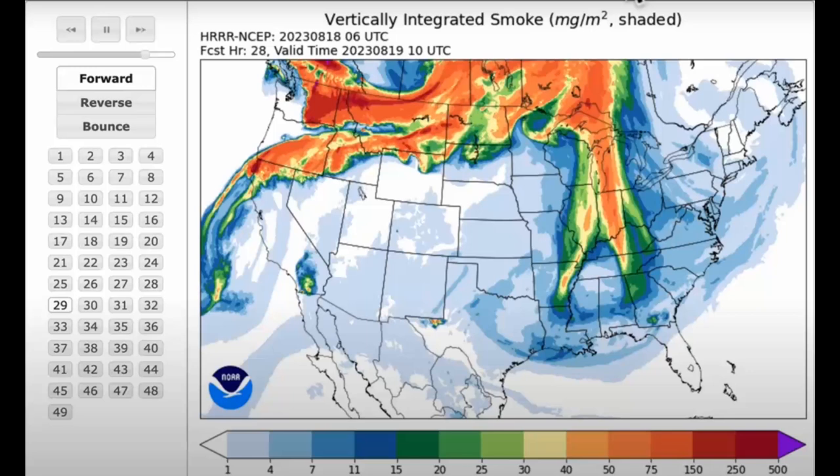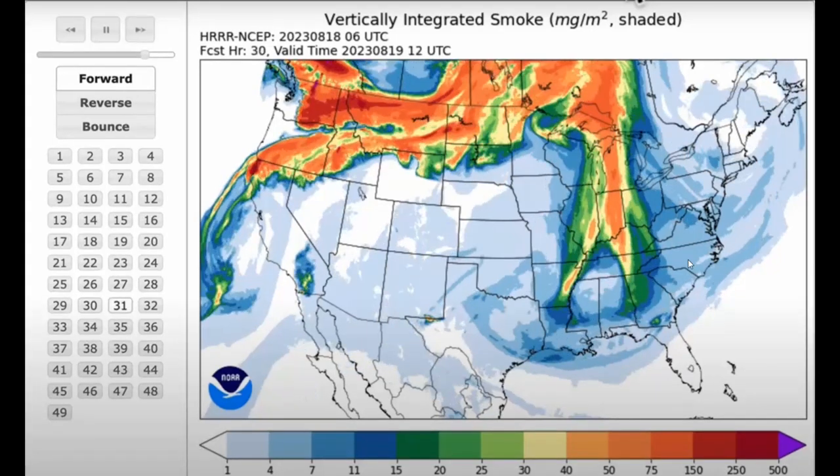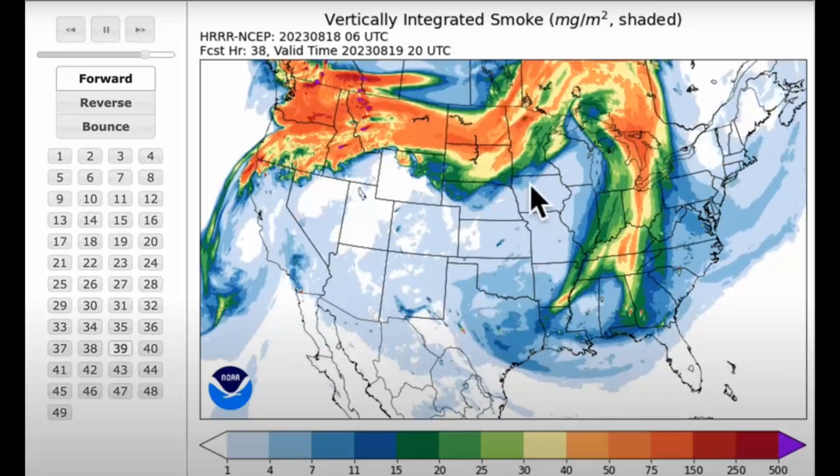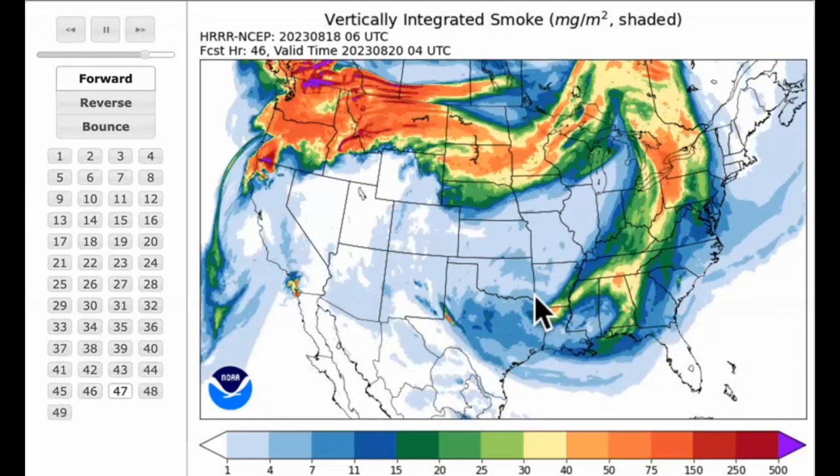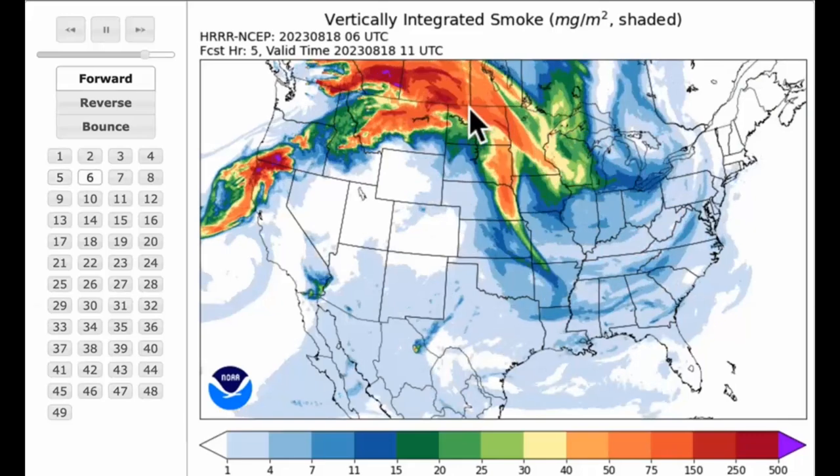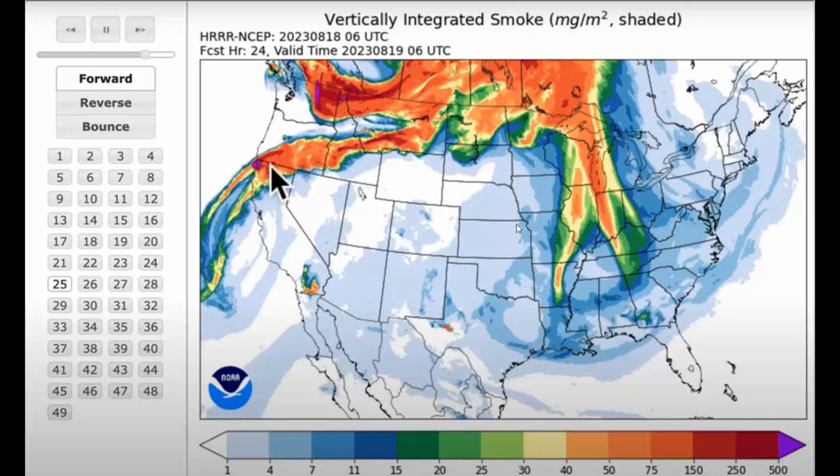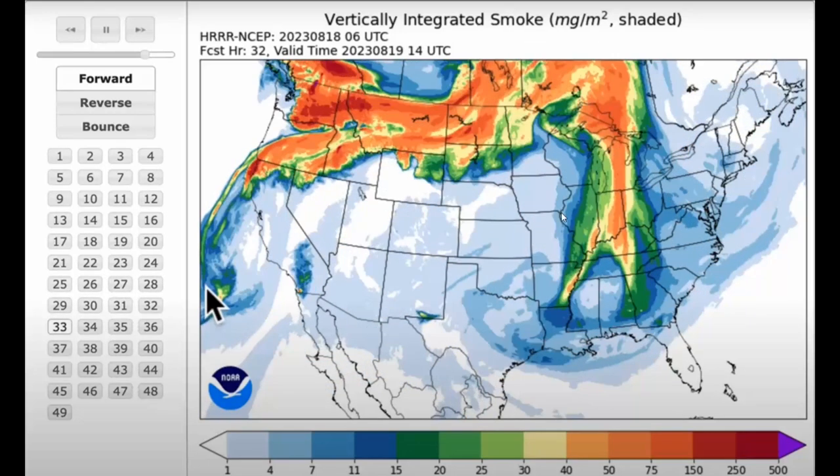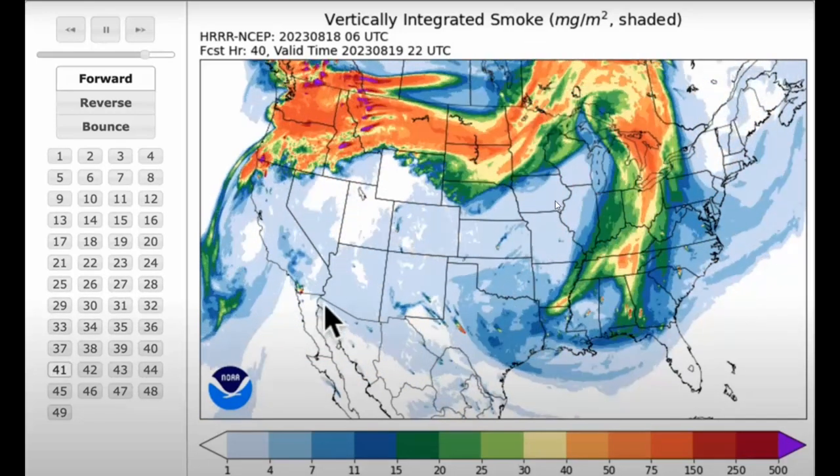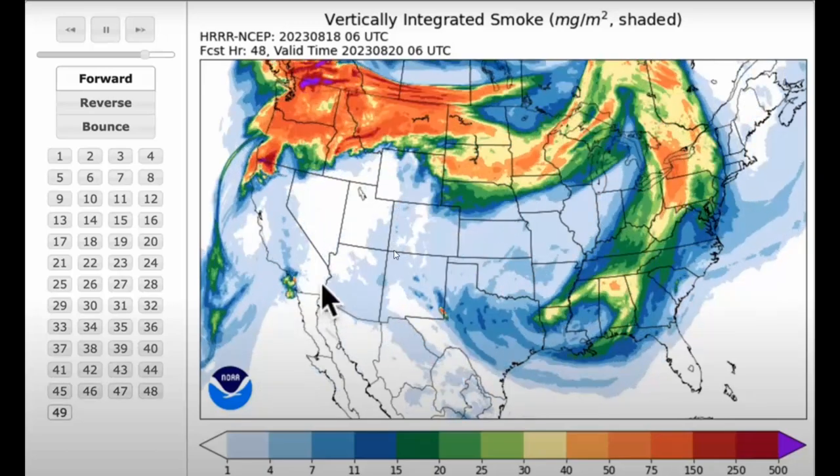Now if you wanted to see where this smoke was going to be going for the next 48 hours, you may wish to turn to a model such as this in order to get an overview of what's going on there. For that, we're going to look at another model that models not only the vertically integrated smoke but also the surface smoke.